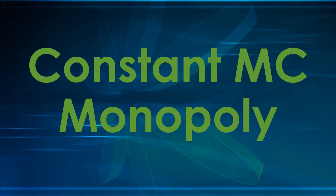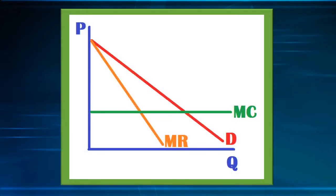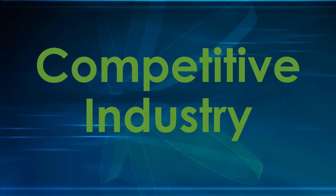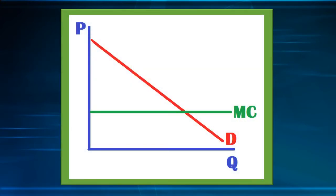Another way to see the problem of allocative efficiency within a monopoly is to look at supply and demand using a constant marginal cost monopoly. This graph shows a downward sloping demand curve, a marginal revenue curve at half the slope of the demand curve, and a straight marginal cost line showing constant marginal cost. In a competitive industry, using the same cost and demand assumptions, we set price equal to marginal cost — where the marginal cost curve crosses the demand curve is our quantity. There is no producer surplus, and the entire yellow shaded region is consumer surplus.